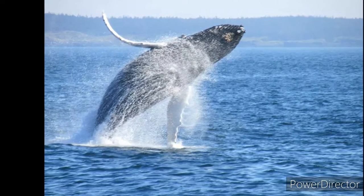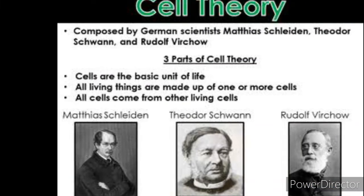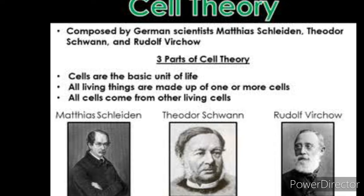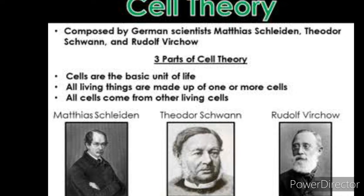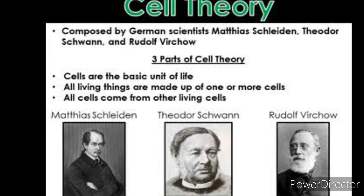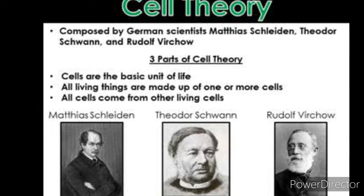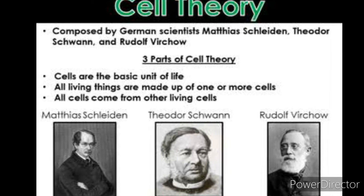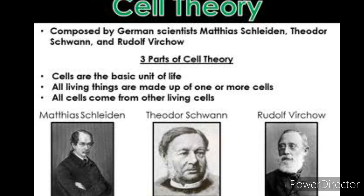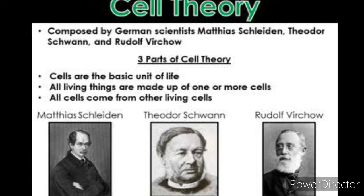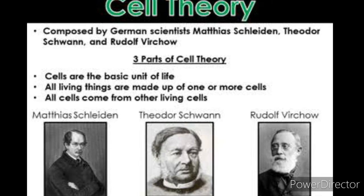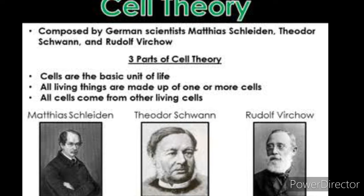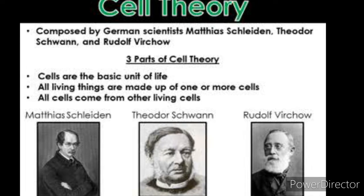Further studies on the cell led to the formulation of cell theory. In 1838, Matthias Schleiden and Theodor Schwann proposed the cell theory, and thereafter studies regarding cells started.